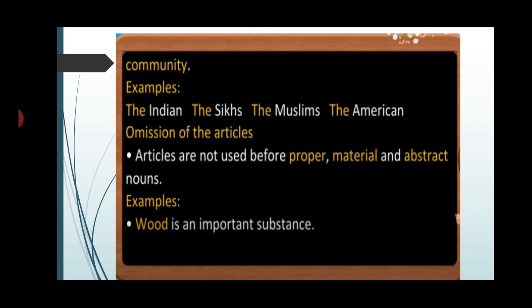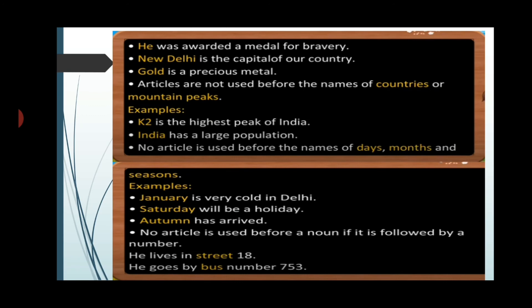Articles are not used before proper, material, and abstract nouns. For example, iron is an important substance — since it is not countable, we do not use an article. He was awarded a medal for bravery. New Delhi is the capital of our country. Gold is a precious metal. Articles are not used before the names of countries or mountain peaks — for example: K2 is the highest peak of India; India has a large population. No article is used before the names of days, months, or seasons — for example: January is very cold in Delhi; Saturday will be a holiday; Autumn has arrived. No article is used before a noun followed by a number, such as: He lives in street 18; He goes by bus number 753.